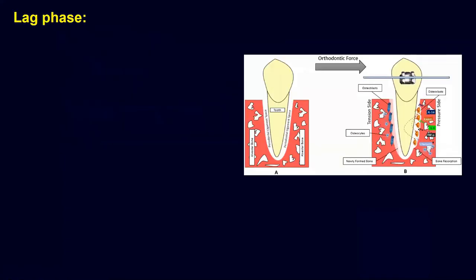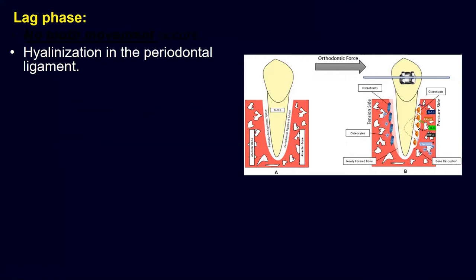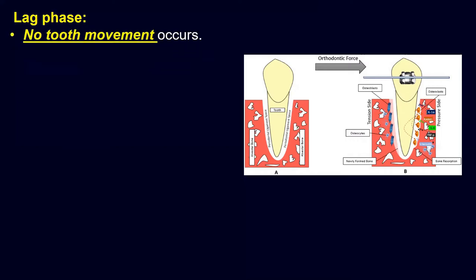In the lag phase, tooth movement is basically stopped because of hyalinization in the periodontal ligament. When a force is applied and a tooth moves within the periodontal ligament, it faces the resistance of the lamina dura. In order to remove this resistance, you need osteoclastic cells to remove the bone so the root can move easily. Some time is needed for activation of the osteoclasts, and this pause for osteoclast activation is basically the lag phase.